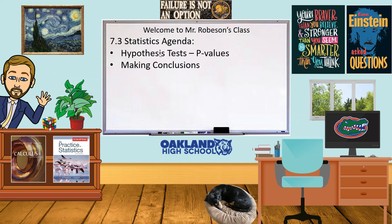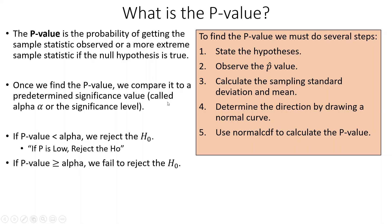All right, 7.3 — hypothesis test and p-value. We're going to learn how to actually do some calculations with hypothesis tests and then make some conclusions about hypothesis tests. We are specifically looking at hypothesis tests for proportions still — only proportions from here on out.